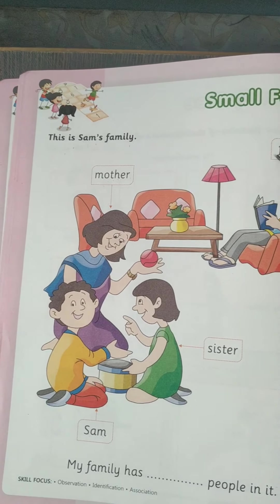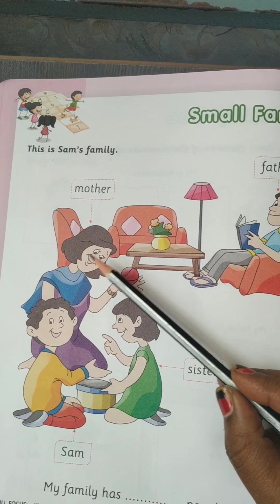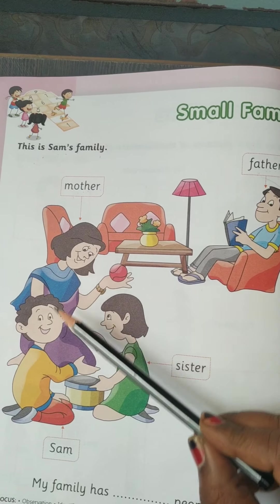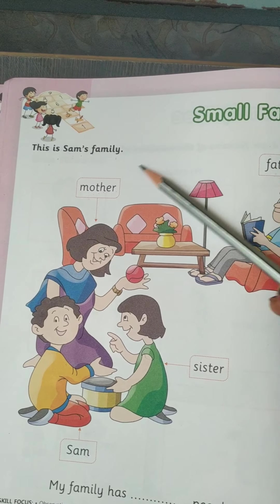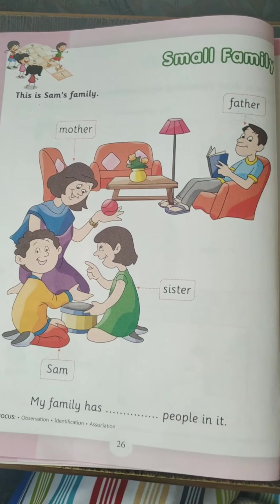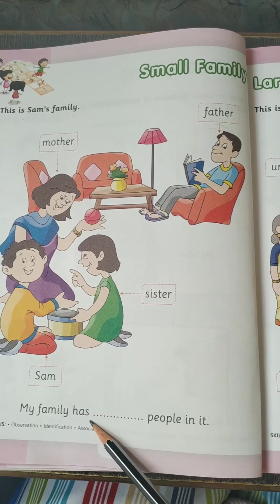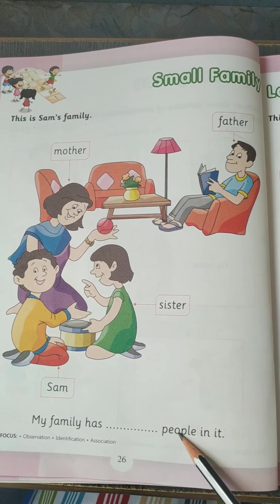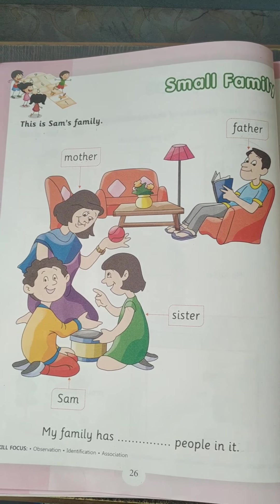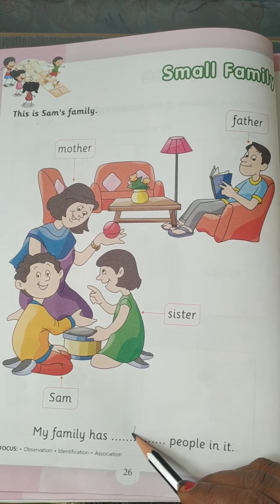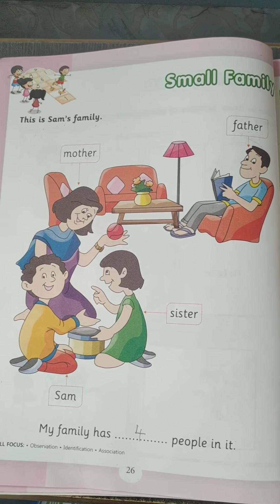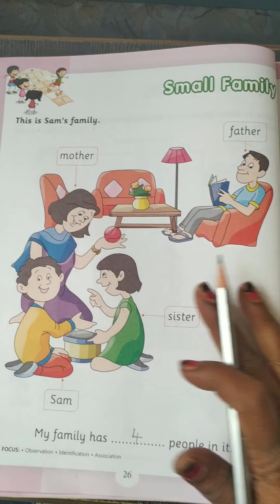How many members are here? Four members. Isn't it? One, two, three, four. So it's called small family. My family has dash people in it. How many people are there? Four. This is small family.